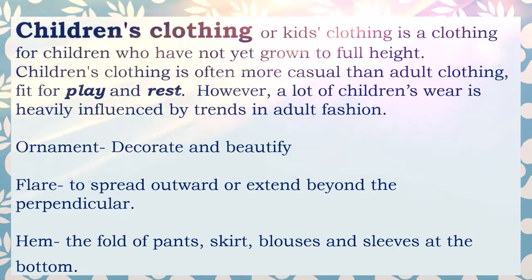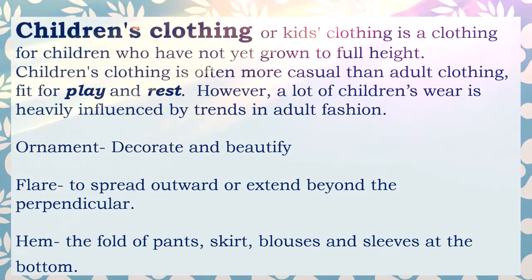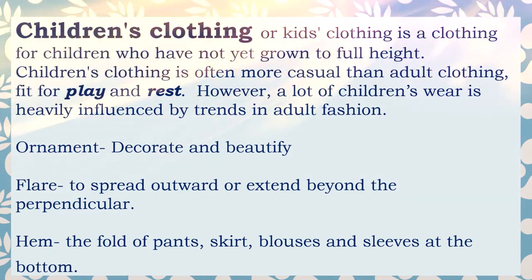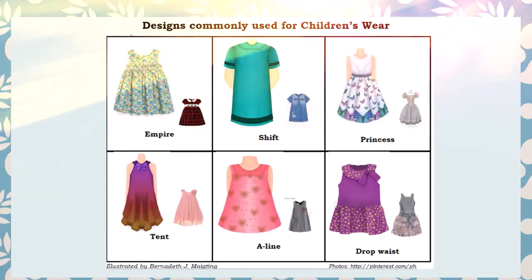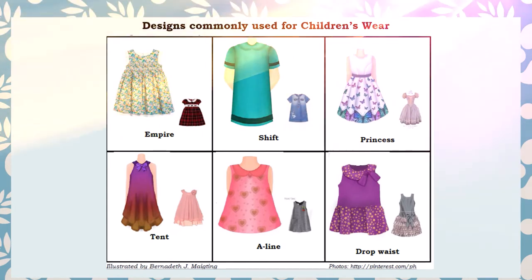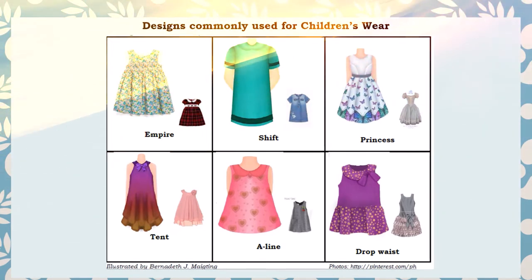Number two is the flare — to spread outward or extend beyond the perpendicular. Number three is the fold of pants that spreads and splits at the bottom. These pictures are examples of designs commonly used for children's wear. We have empire, ship, princess, tent, A-line, and droplet styles, as illustrated by Bernadette J. on Pinterest.